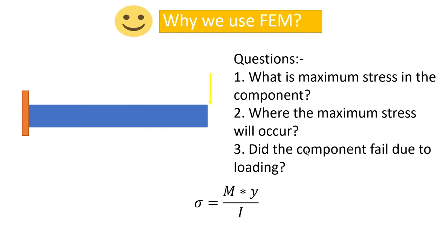The bending moment formula is given by σ = M·y/I, where the moment M = P × L (maximum moment at the fixed end) and y = ±H/2 measured from the neutral axis. To check if the component fails, we predict the stresses and compare with the yield stress. If stresses exceed yield stress, the component is in the plastic region; if they exceed the ultimate limit, the component has failed.